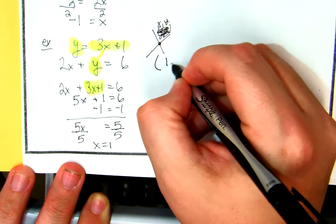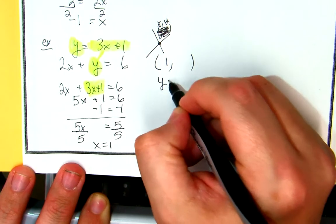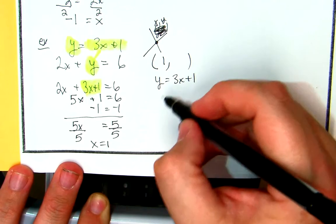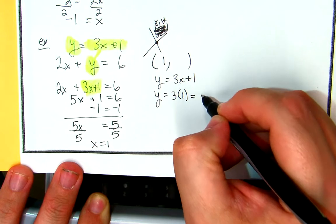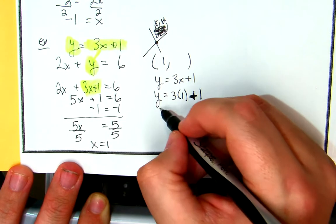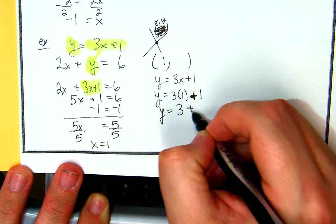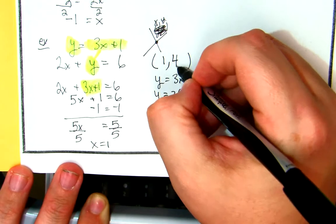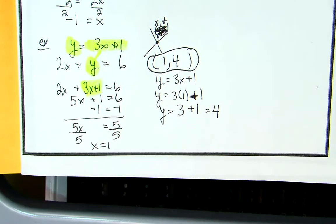So I know the point of intersection is going to be 1 comma something. I'm going to use the first equation, y is equal to 3x plus 1, and I know x is 1. So I'm going to say y is equal to 3 times the 1 plus 1. So y is equal to, what's 3 times 1? 3 plus 1, which is equal to 4. So my solution is the point 1, 4.